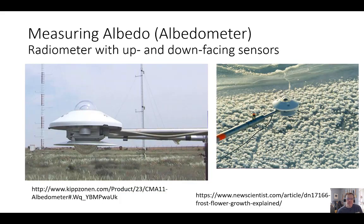Albedo is measured by having radiometers facing up and another paired radiometer facing down. You can see an example here. Just by looking at the ratio of those two, you can measure the albedo.